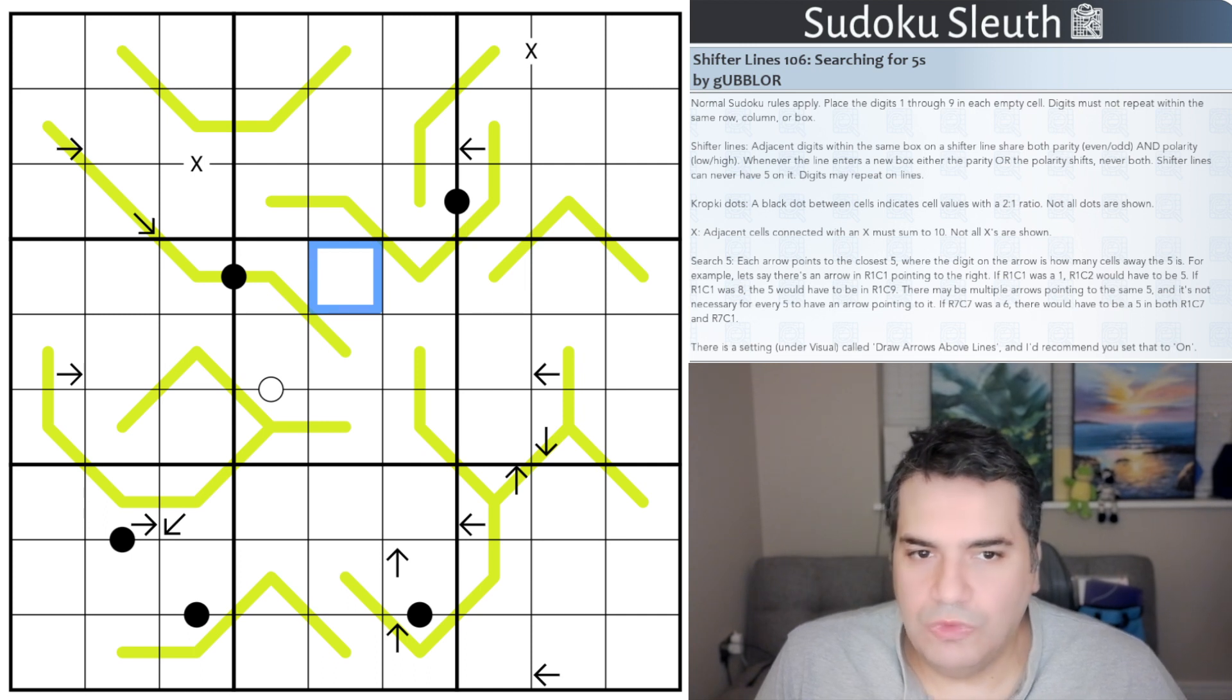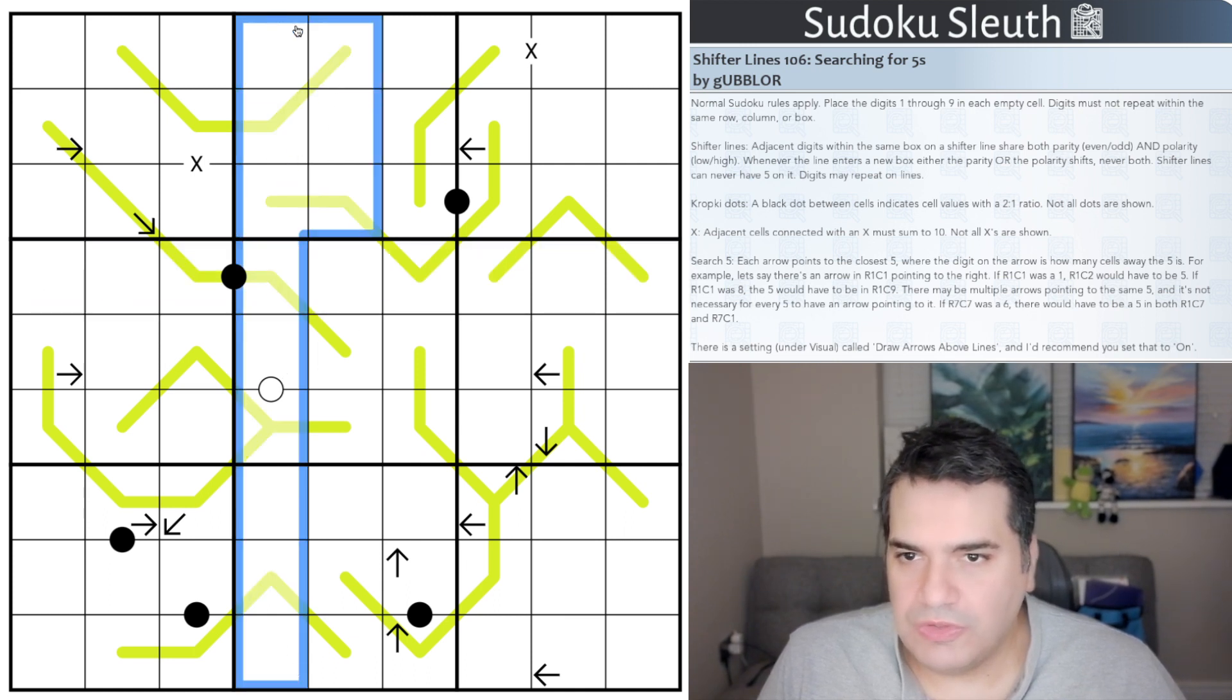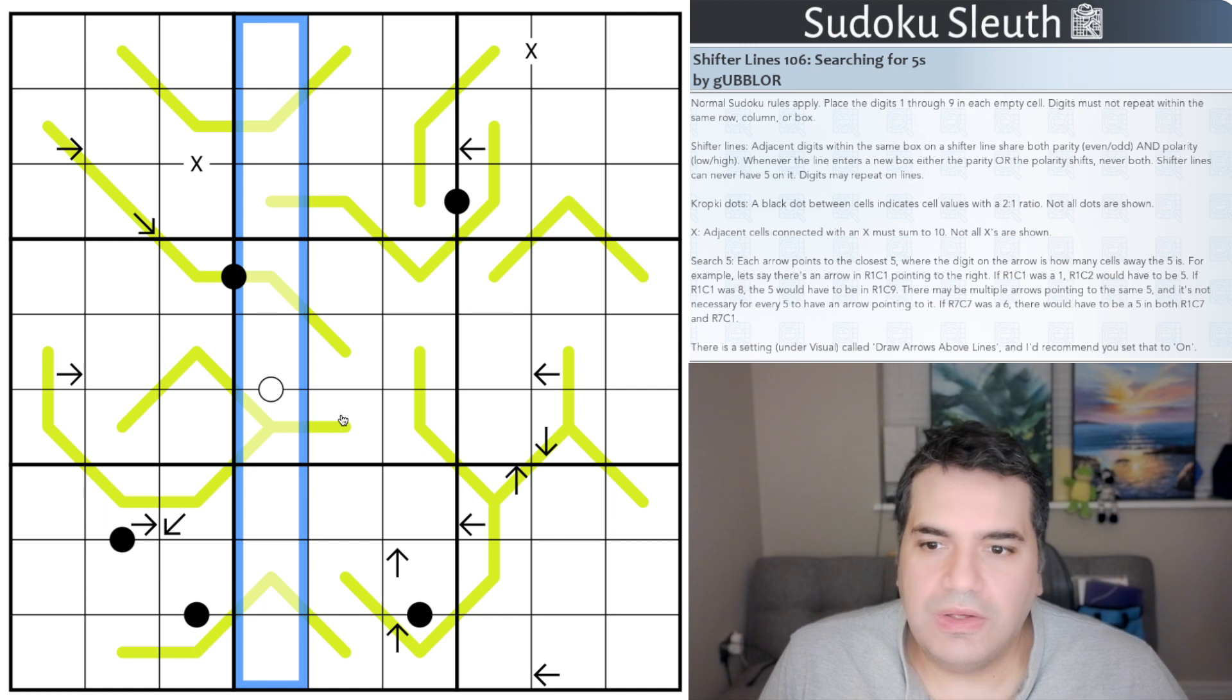Right, rules. Normal Sudoku rules apply. That means place the digits one to nine once each in every row, in every column, and every three by three box, fairly standard.